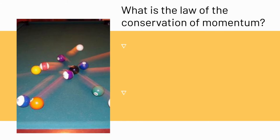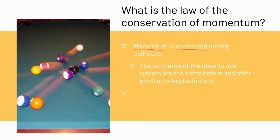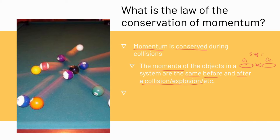What is the law of the conservation of momentum? The law says that momentum is conserved during a collision. The momenta of the objects in a system are the same before and after a collision, explosion, etc. So we have two objects — object one and object two — and when they collide with each other, the system's momenta are the same before and after the collision.